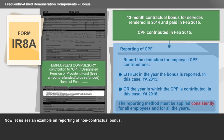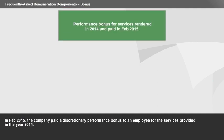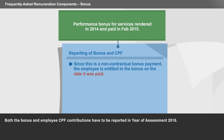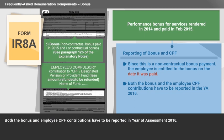Now, let us see an example on reporting non-contractual bonus. In February 2015, the company paid a discretionary performance bonus to an employee for the services provided in the year 2014. Since this is a non-contractual bonus payable at the discretion of the employer, the employee is entitled to it on the date it was paid. Both the bonus and employee's CPF contributions have to be reported in the year of assessment 2016.